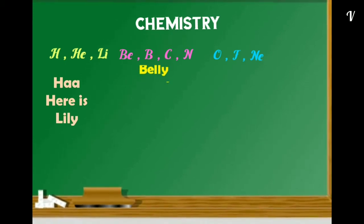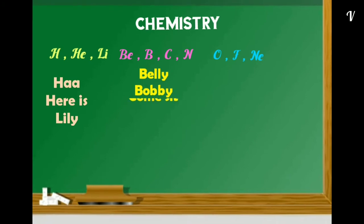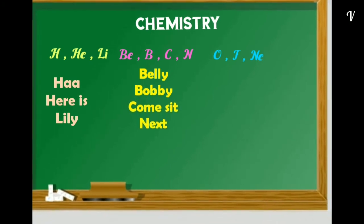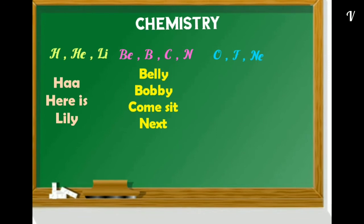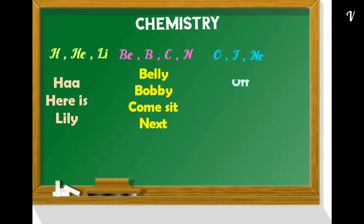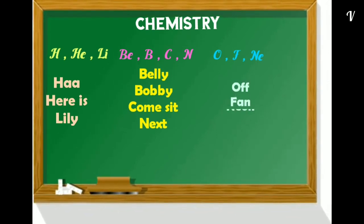He for Helium, Li for Lithium. Belly Bobby come sit next - Be for Beryllium, B for Boron, C for Carbon, N for Nitrogen. Of Fan Neon - O for Oxygen, F for Fluorine, Ne for Neon.